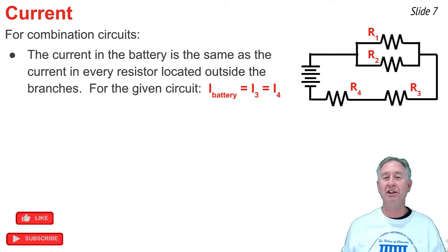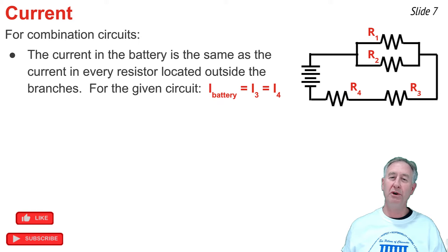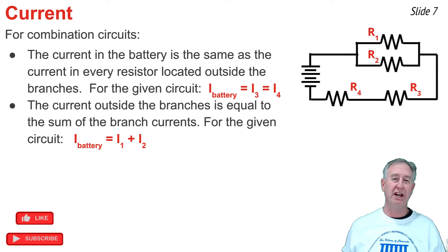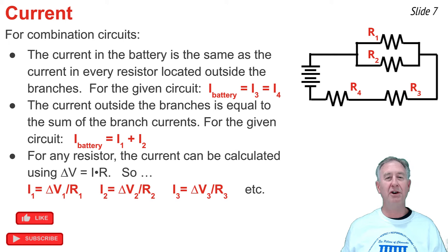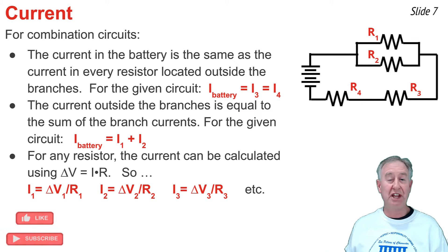For combination circuits, the current in the battery equals the current in every resistor located outside the branches. Resistors 3 and 4 are series connected, so I-battery equals I3 equals I4. However, at the node leading into the branches, current splits into two smaller values. The sum of the branch currents I1 plus I2 equals the current outside the branches. For any resistor, current can be calculated using I equals delta V divided by R.